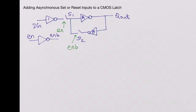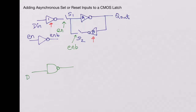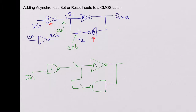This is the CMOS latch. Now how do we add a set or reset input? We will change inverters 1 and B to NAND gates. So this gate is changed to a NAND gate — one input is D in — and you still have switch S1 and inverter A as is. So inverter 1 has become NAND gate 1. The output of inverter A goes to another NAND gate, with the same connection as before. This is inverter B now turned into a NAND gate.